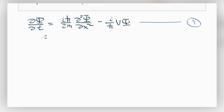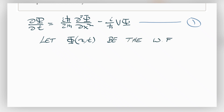Now we're going to let φ(x,t) represent the wave function with that potential V₀ added. So we let φ(x,t) be the wave function with potential V(x,t) plus V₀.